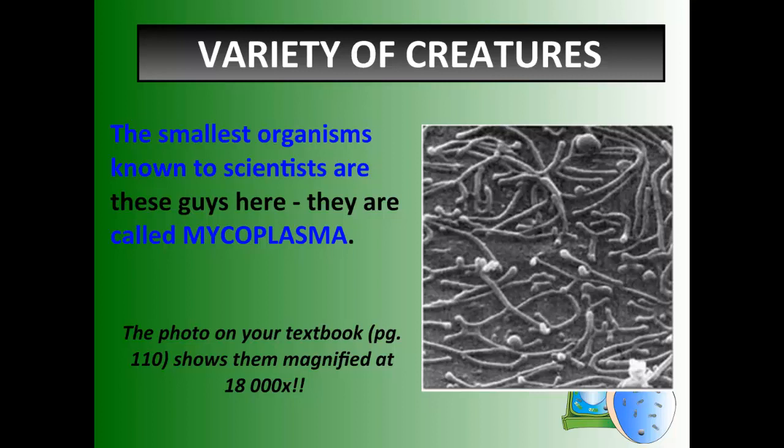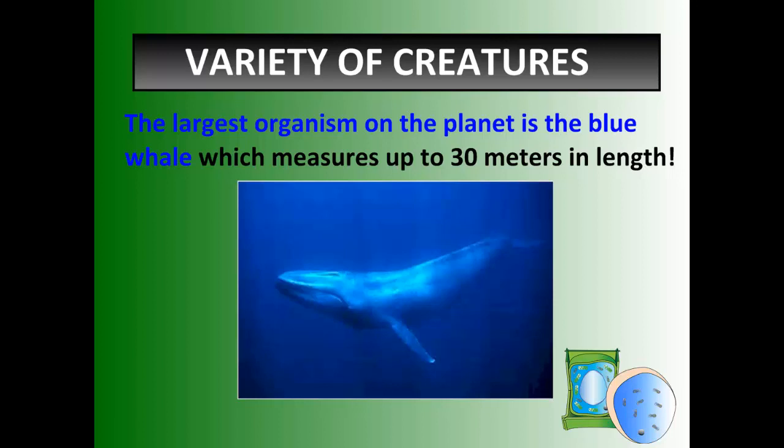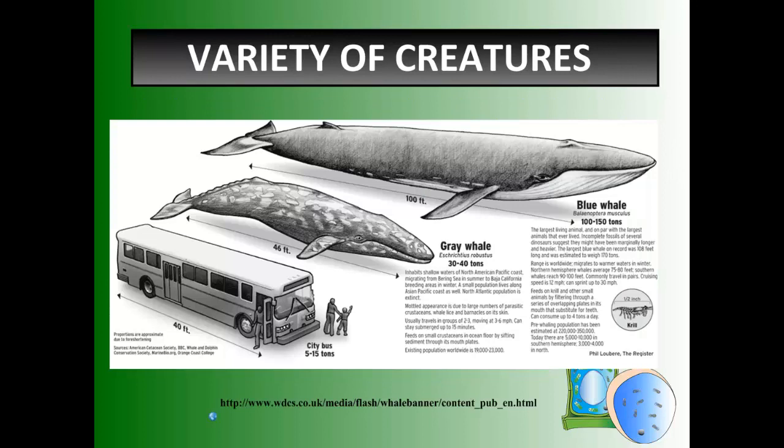On the other end of the spectrum, the largest organism on the planet, clearly multicellular, is the blue whale — 30 meters in length. How big is 30 meters? That's roughly 100 feet. A city bus is 40 feet, so you're looking at two and a bit city buses long, weighing 100 to 150 tons. That is massive, and the only place for that organism to survive is, of course, in our oceans.